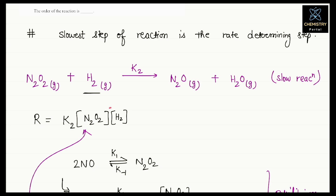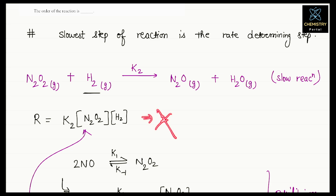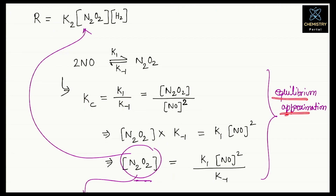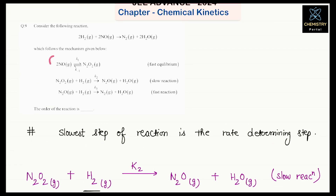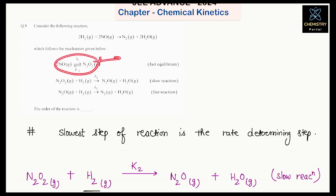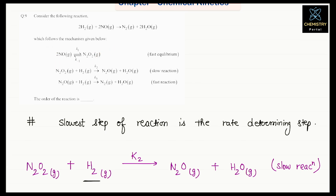If you gave the answer as 1 + 1 = 2, that is a blunder mistake. You should not do that because N₂O₂ is appearing as an intermediate. That's why we applied the equilibrium approximation method here. I hope you all understood. Thank you, and please like, share, and subscribe to our channel, Chemistry Portal. Thank you everyone.